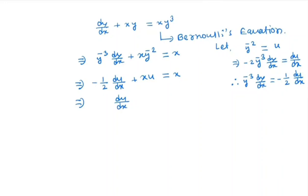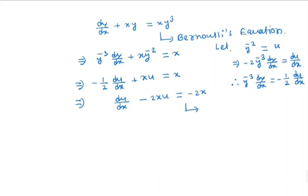Simplifying this equation, we get du/dx minus 2x·u is equal to minus 2x. This is a linear first-order ODE, and we already know how to solve it by using an integrating factor — I will give the link in the description box.